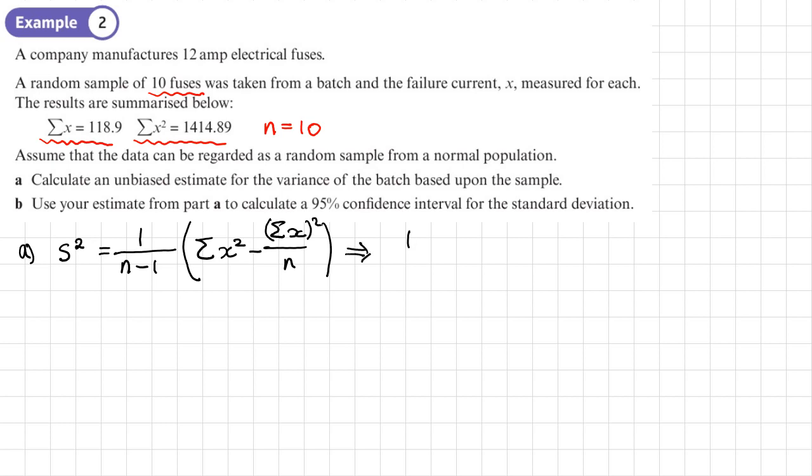Let's now put the numbers in and work them out. It's 1 over (n-1), so 10 minus 1, so 1 over 9. Sum of x squared is 1414.89, minus (118.9)^2, divided by n, so divided by 10. Let's stick this on the calculator and see what we get. That gives me exactly 1169 over 9000. As a decimal, it's 0.1298888, and so on. But we'll leave it as that exact fraction.